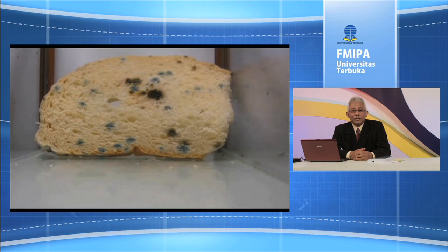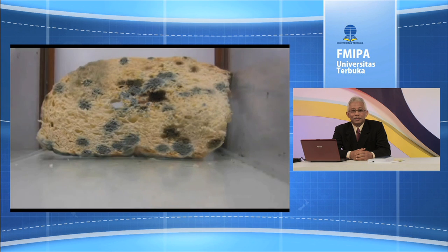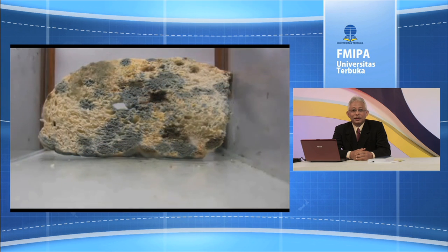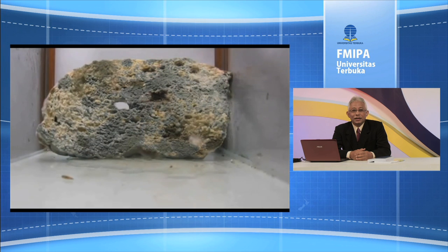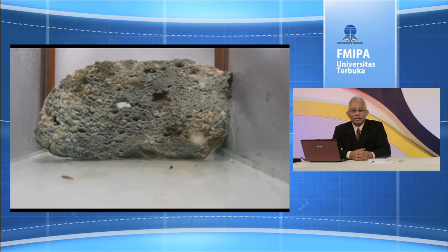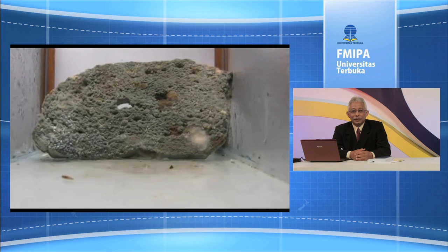Mula-mula pada permukaan roti hanya terlihat noda kecil. Pada hari berikutnya, noda tersebut semakin membesar. Esoknya lebih besar lagi. Demikian seterusnya dari hari ke hari hingga semua permukaan roti tertutup jamur. Hal ini menunjukkan bahwa jamur yang tumbuh di permukaan roti tersebut mengalami pertumbuhan.